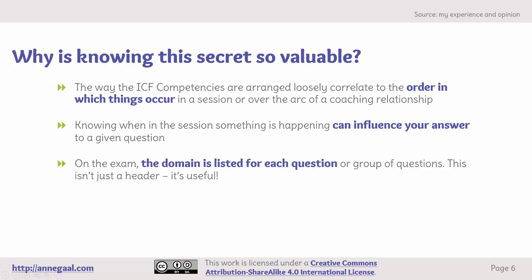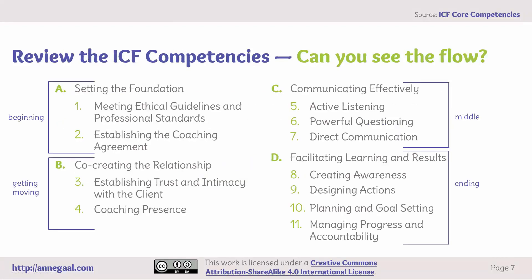So why is knowing this tip so valuable? The way the ICF core competencies are arranged loosely correlates to the order in which things occur in a session or over the arc of a coaching relationship. Knowing when in a session something is happening can influence your answer to a given question. On the exam, the domain is listed for each question or group of questions — this isn't just a header, it's useful information. There are 11 ICF core competencies grouped into four categories: setting the foundation, co-creating the relationship, communicating effectively, and facilitating learning and results — the same headers or domains that appear in the CKA.